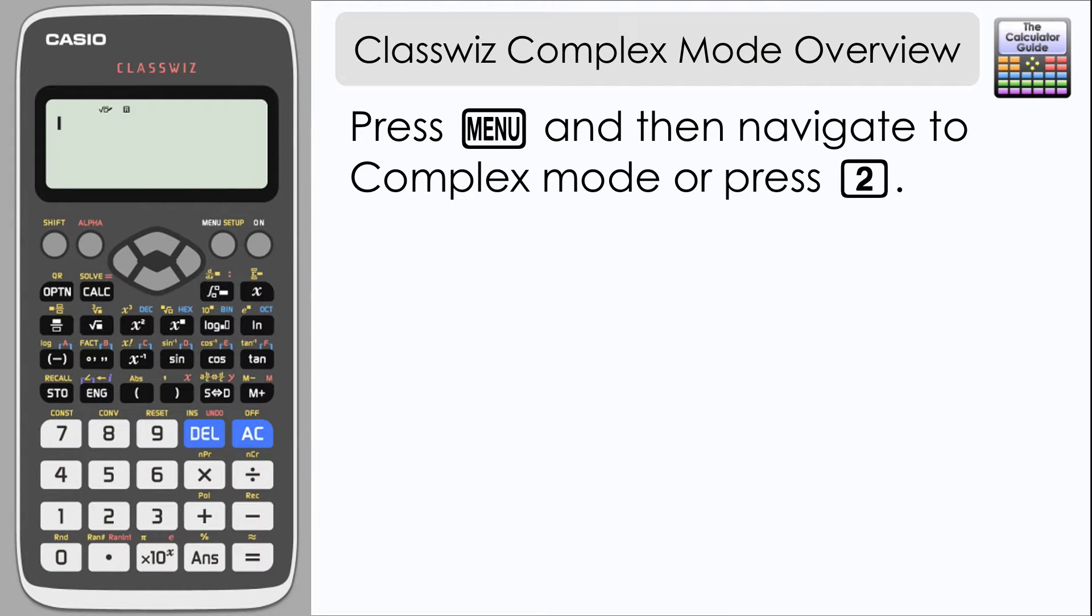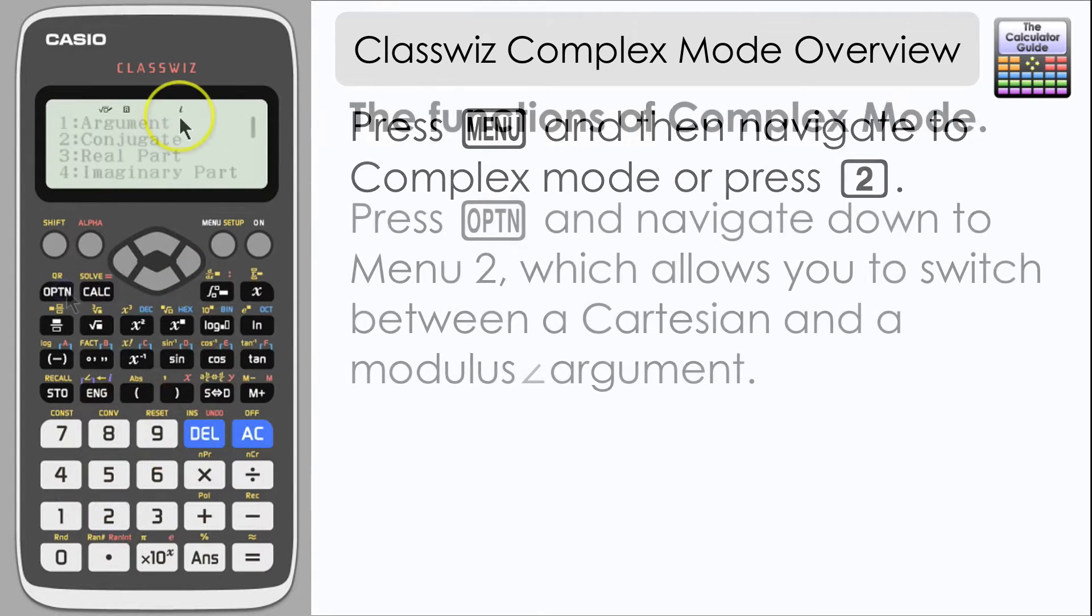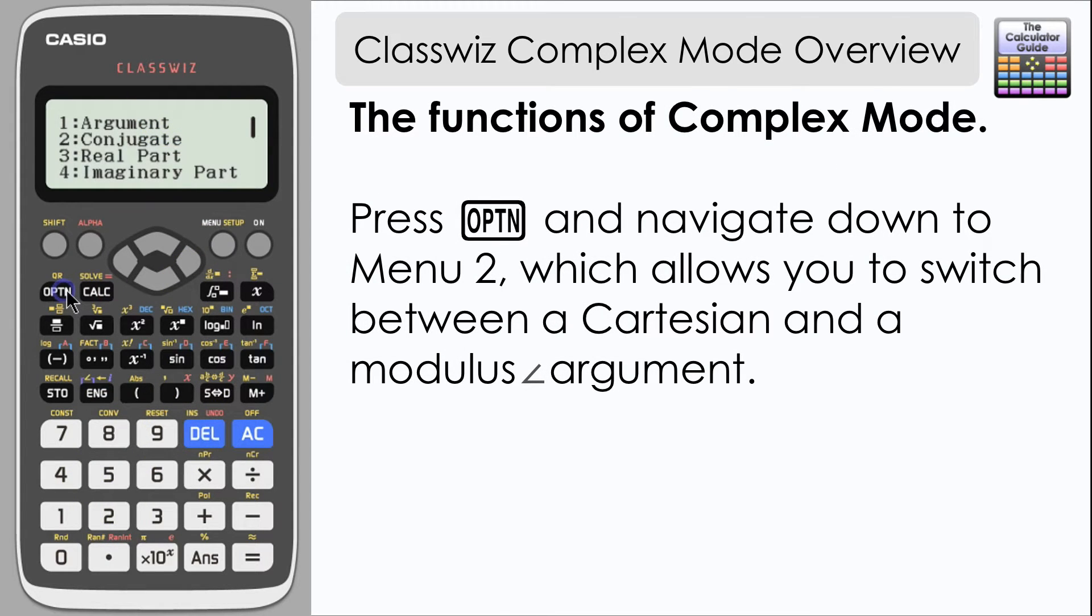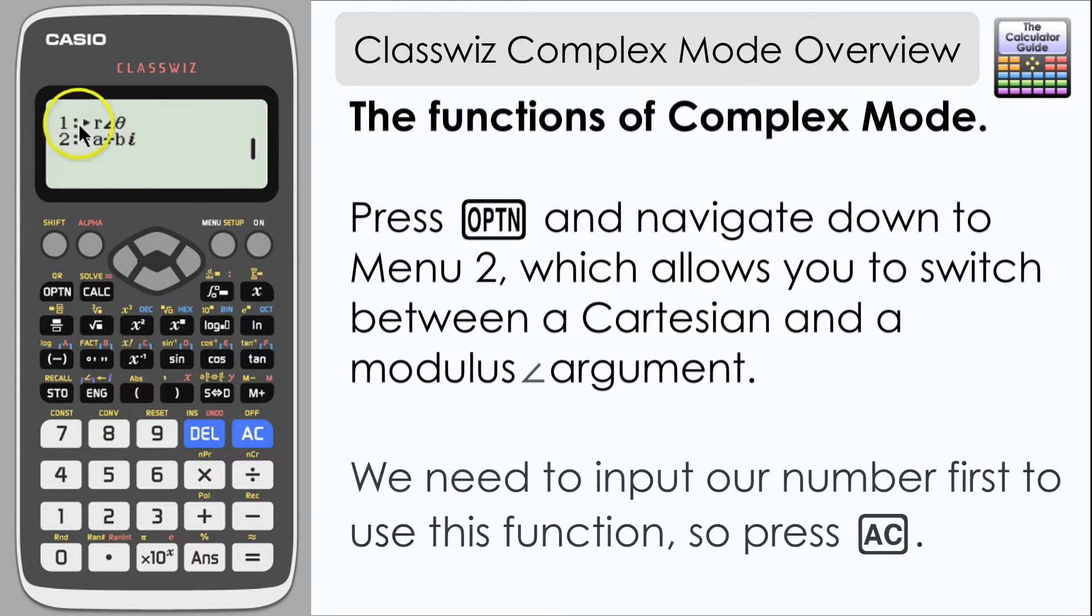Press MENU and then navigate to complex mode or press 2 to enter complex mode. Now we're in complex mode. I'm just going to show you what functions we're going to use—they're on the second menu from the options in complex mode and we can see them displayed here.